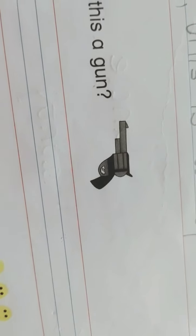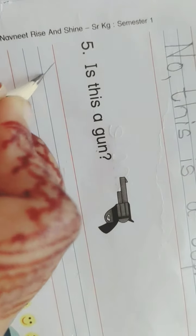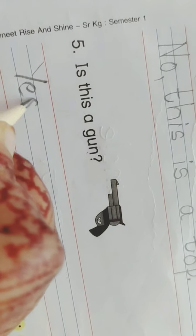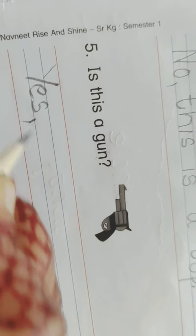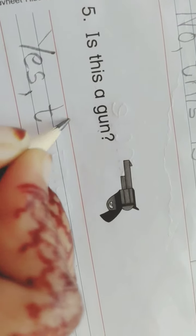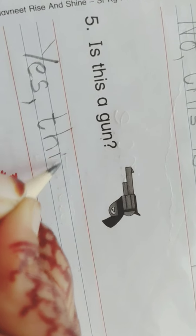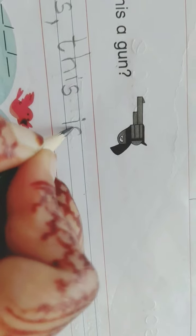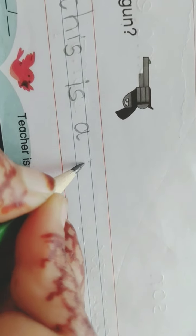Is this a gun? Yes, students. It is a gun or no? Yes. You have to write here, yes. Yes, yes, Y-E-S, yes. Comma. This is a gun. This is a gun.